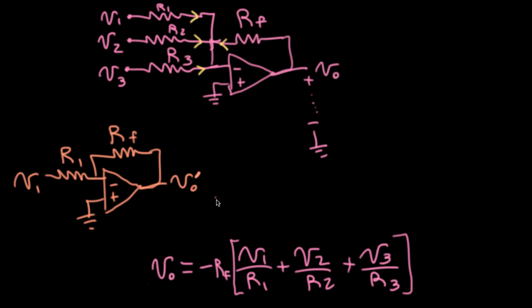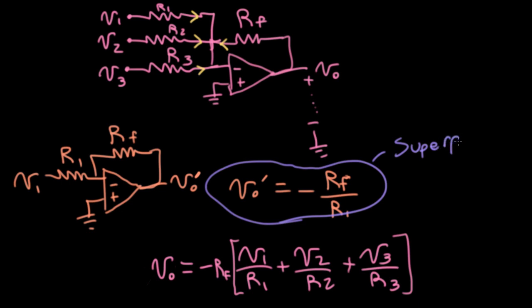In that lecture, we discovered that VO prime would be equal to the feedback resistance, which always goes on top, over R1. And the way to remember that there's a minus sign here is that if I'm holding this at a virtual ground, and the current flowing in here has to equal the current flowing out, that means that these voltages must have opposite signs.